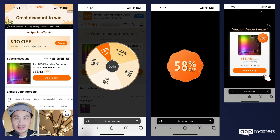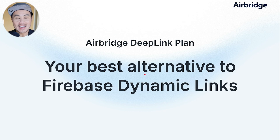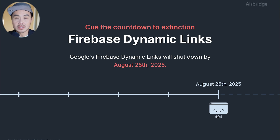We're going to share with you the simplest way to get started right now. The Firebase dynamic links — the deep links — are going away. Airbridge has a great solution for you. If you've been using Firebase dynamic links, it's going away. Google is going to shut it down August 25th, 2025. So you've got a bit of time, but you want to start now because if you're a big company like Temu, you probably have a lot of deep links.